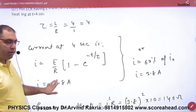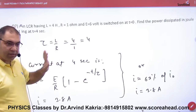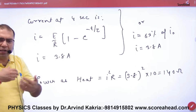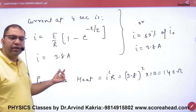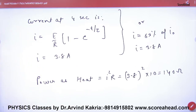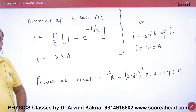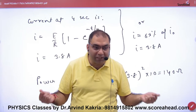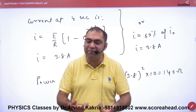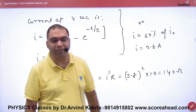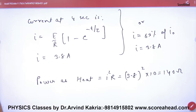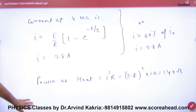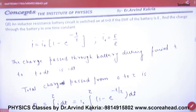In DC circuits only R comes — not Z (which appears in AC). So here you have the current value because E is known, R is known, time t = 4 seconds is known, and you can find τ = L/R. Calculate to get the current value, then find I²R. The method is to understand how to approach this question. Often students don't realise whether it's a growth or decay of current problem.